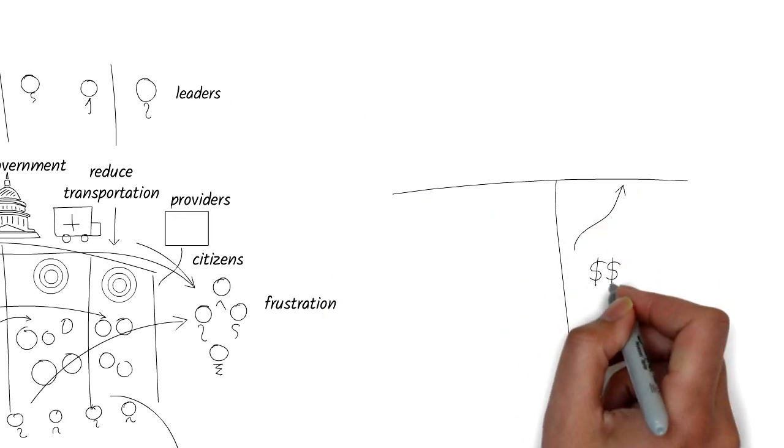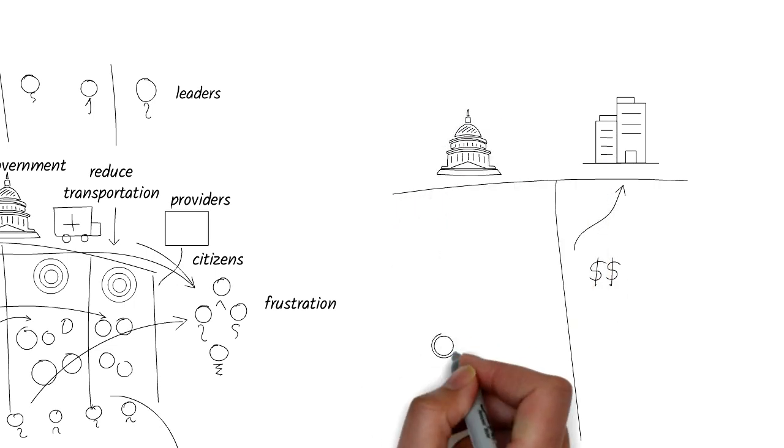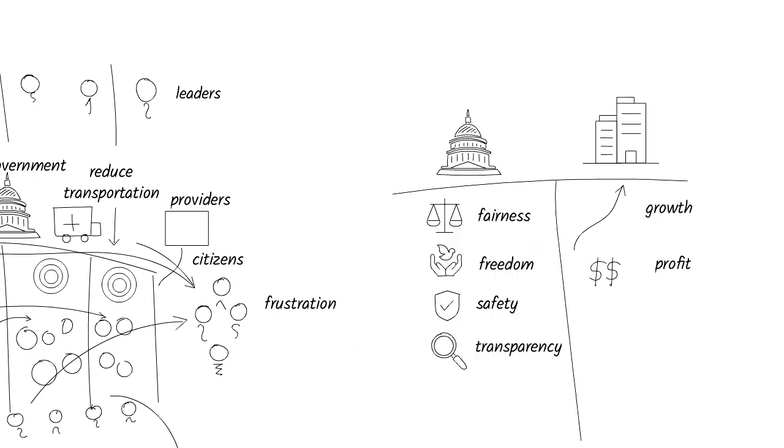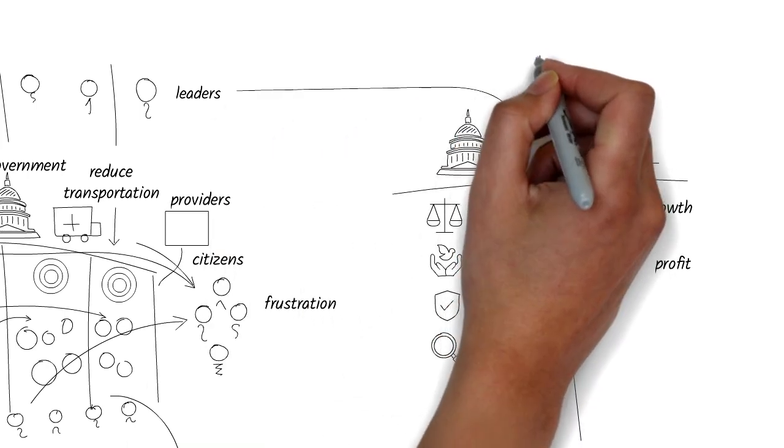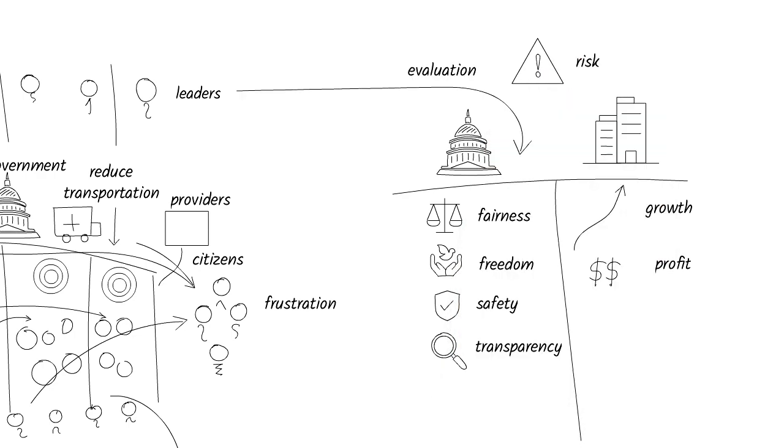Unlike businesses that seek growth and profit, governments must focus on things like fairness, freedom, safety, and transparency to ensure that the tax dollars are spent equitably and responsibly. Leaders must evaluate all technology investments not only for functionality, but also for risks to these criteria.